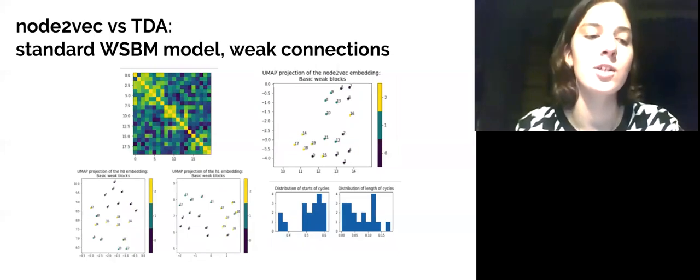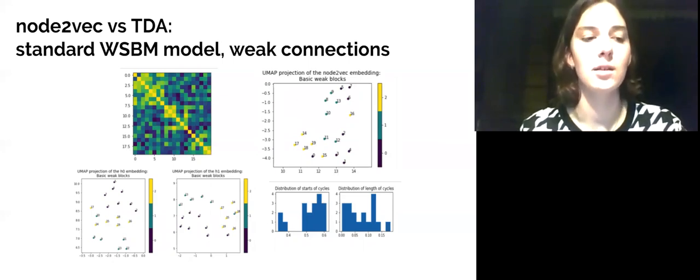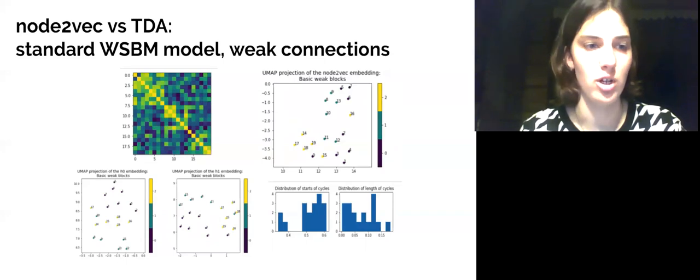Outside block connection is decreased now in comparison with the previous example. Weak connections are modeled now with the mean equal to minus 0.5. In this case, node2vec representation became non-informative, while TDA embedding demonstrates big similarity to the medium case. Points are scattered on the UMAP plot, but still the nodes from the same block are located near each other.